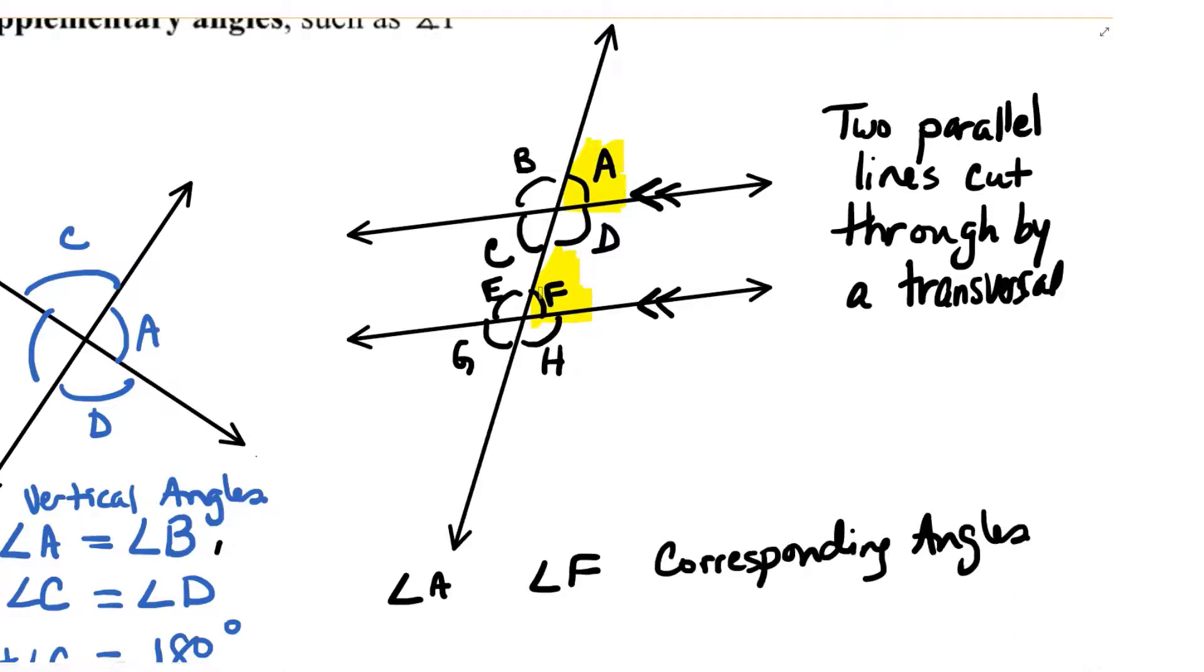and they're both on the same side as the transversal. So they correspond to each other in that way. And it turns out that corresponding angles are equal. It must be because that transversal is cutting through at the same angle to both of those parallel lines.